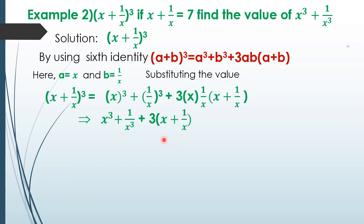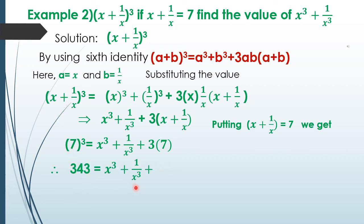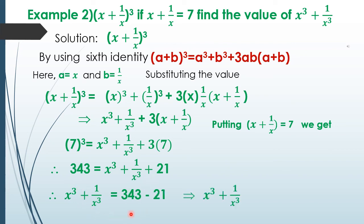Putting x + 1/x = 7: 7³ = x³ + 1/x³ + 3 × 7. Since 7³ = 343, we get 343 = x³ + 1/x³ + 21. Therefore x³ + 1/x³ = 343 − 21 = 322.